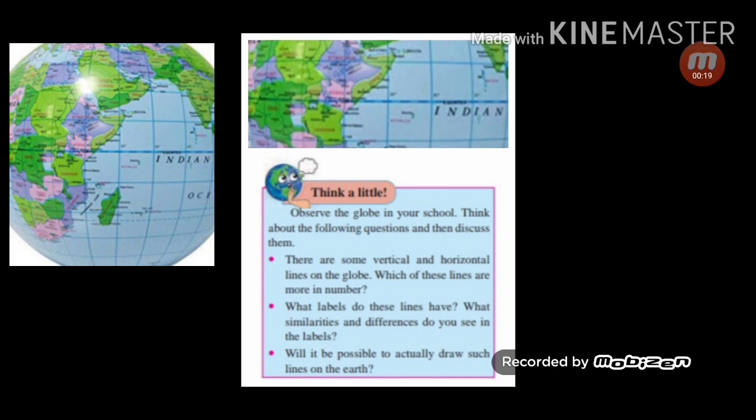Here are some questions for you to think about. There are some vertical and horizontal lines on the globe. Which of these lines are more in number? What labels do these lines have? What similarities and differences do you see in the labels? Will it be possible to actually draw such lines on the earth?